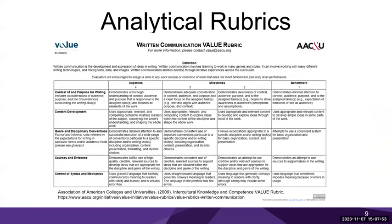The rubric shown here exemplifies the components of an analytical rubric. The first column on the left is the dimension or criteria — this is the y-axis. Across the x-axis are the performance levels, and in between you'll see the descriptors for each of those performance levels.